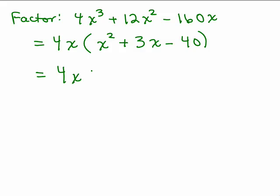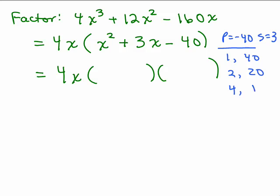Now this is going to be easier to factor what's left in parenthesis. The product would have to be negative 40 and the sum would be 3. If we list the numbers that multiply to be 40, I've got 1 and 40, 2 and 20, 4 and 10, 5 and 8. Those are the only possible factors of 40.